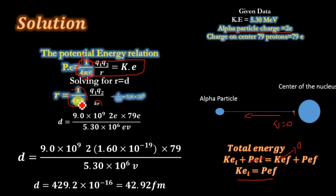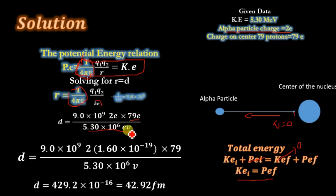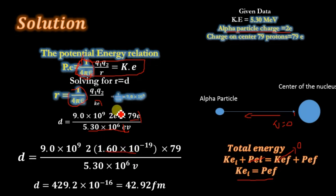Putting in the values for constant k, q1, q2, and kinetic energy, we get 9.0 times 10 to the power 9, multiplied by q1 equal to 2 electrons and q2 equal to 79 electrons, divided by kinetic energy equal to 5.30 mega electron volts, where 10 to the power 6 accounts for the mega term. The e cancels out, leaving 9 times 10 to the power 9 multiplied by 2 times 79 times 1.60 times 10 to the power minus 19, which is the charge on the electron.